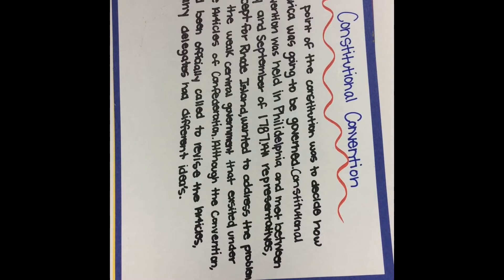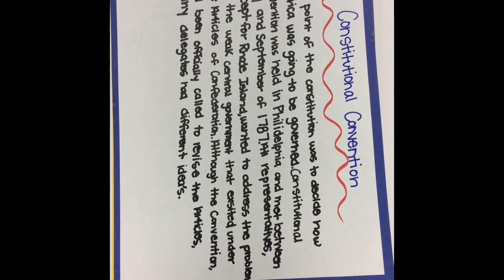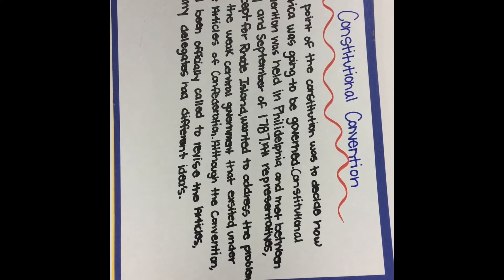The Constitutional Convention. The point of the Constitution was to decide how America was going to be governed. The Constitutional Convention was held in Philadelphia and met between May and September of 1787. All representatives, except for Rhode Island, wanted to address the problem of the weak central government that existed under the Articles of Confederation. Although the Convention had been officially called to revise the Articles, many delegates had different ideas.